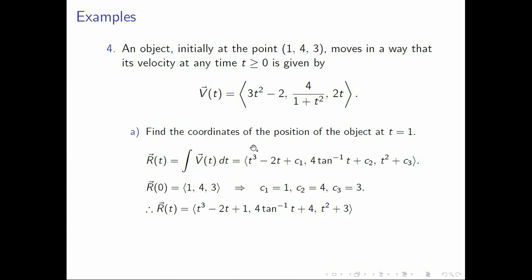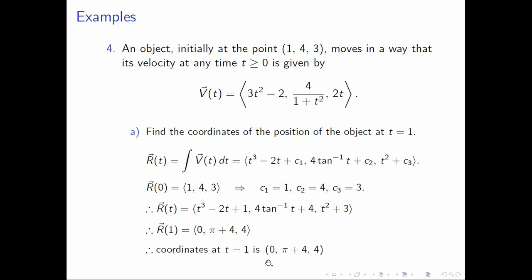We want the coordinates when t=1. Computing r(1): first component is 1 - 2 + 1 = 0. Second is 4 arctan(1) + 4 = 4·(π/4) + 4 = π + 4. Third is 1 + 3 = 4. So r(1) = (0, π + 4, 4), and the coordinates of the position at t=1 are (0, π + 4, 4).